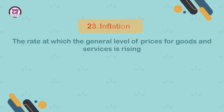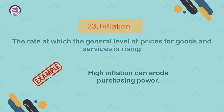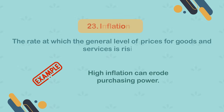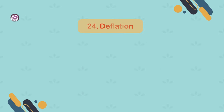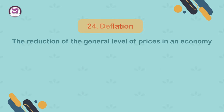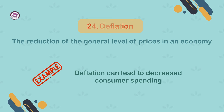23. Inflation. The rate at which the general level of prices for goods and services is rising. Example: high inflation can erode purchasing power. 24. Deflation. The reduction of the general level of prices in an economy. Example: deflation can lead to decreased consumer spending.